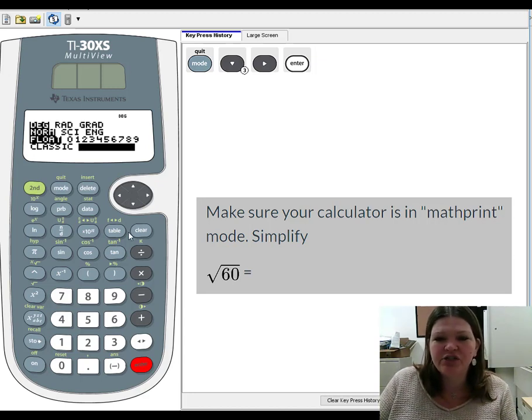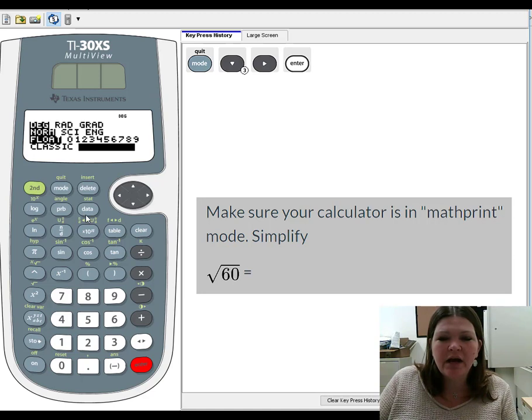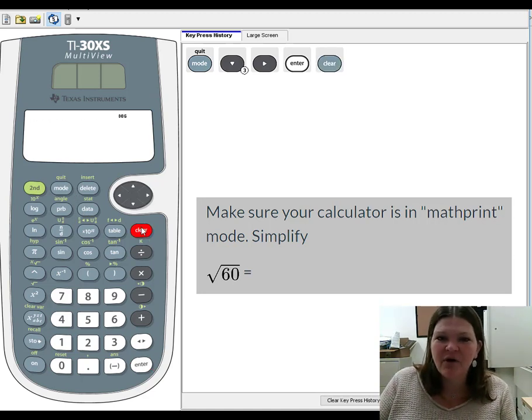Now how do I get out of the screen? There's actually two ways. You can press second quit, but the easiest way is just to press clear and you'll leave the screen. And there you are. Now I know that I'm in math print mode and ready to get a simplified radical for an answer.